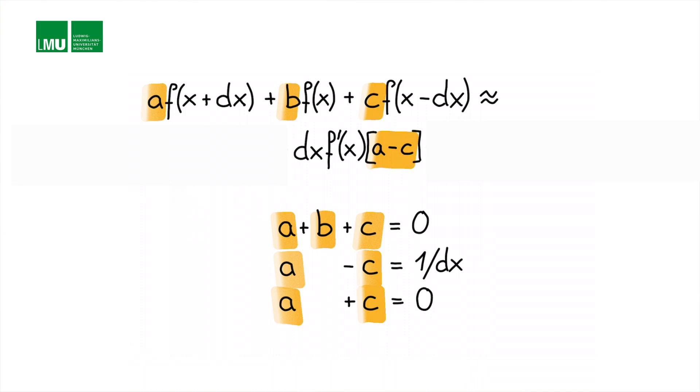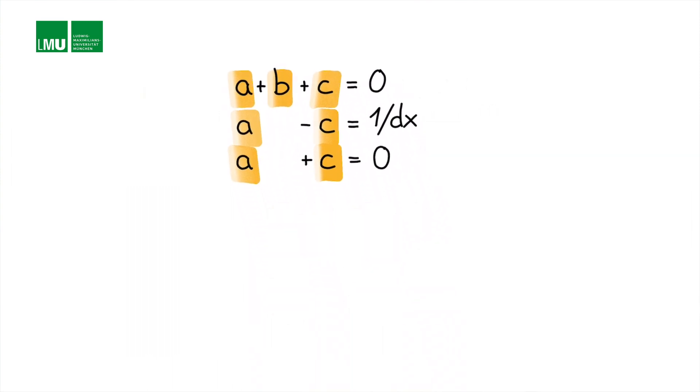So can we formulate that or reformulate that to find those coefficients? That can be done using matrix vector notation as we see here. We can simply write those conditions formally a plus b plus c equals 0, a minus c equals in this case 1 over dx and a plus c equals 0.